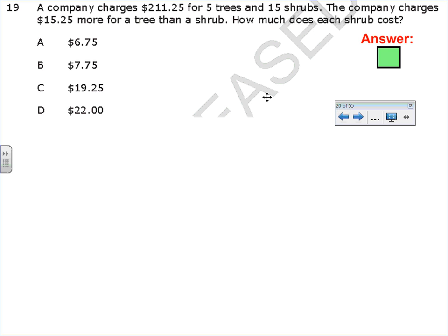For 19, this one's a little bit trickier. It says, a company charges $211.25 for 5 trees and 15 shrubs. The company charges $15.25 more for a tree than a shrub. That means the trees are more expensive than the shrubs by $15.25. How much does each shrub cost? There's 2 different ways that you can do this.